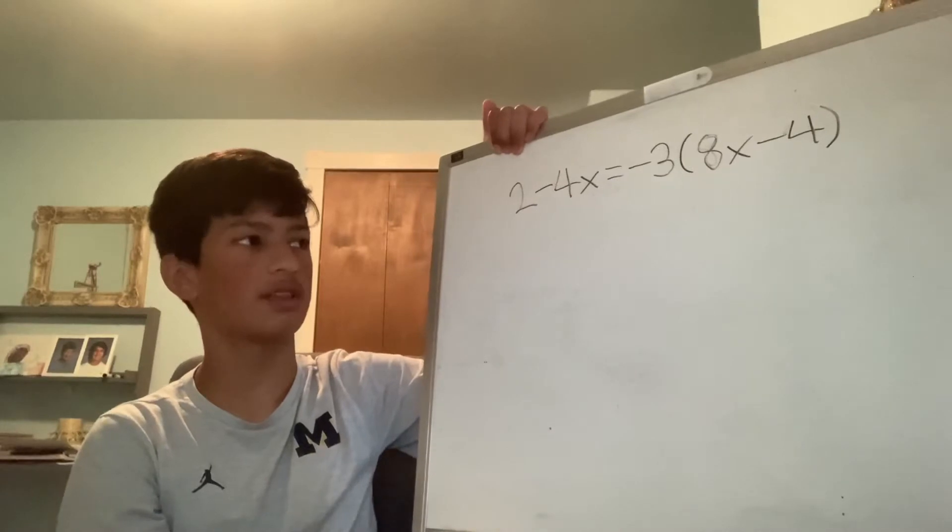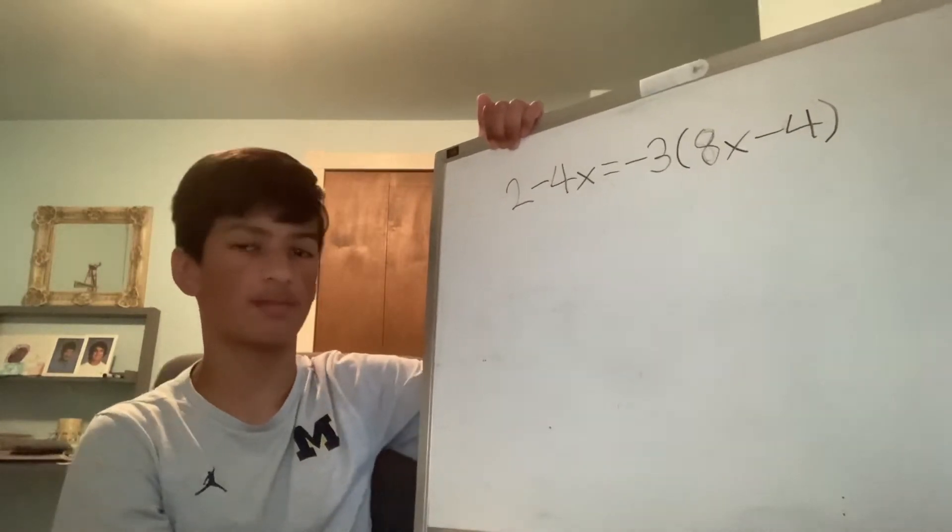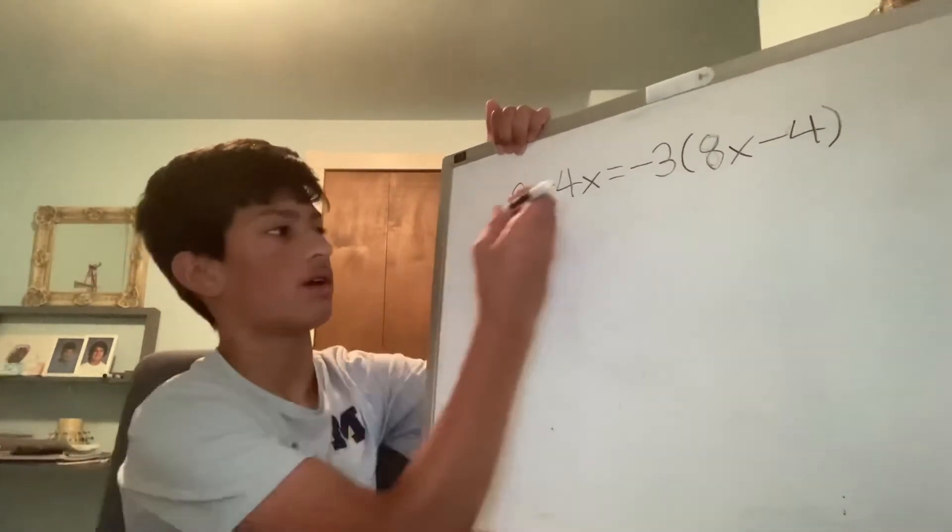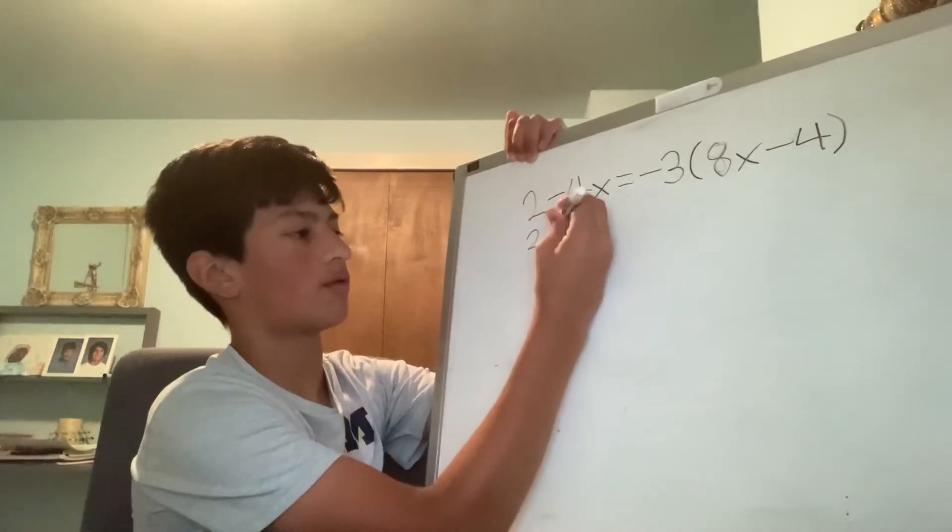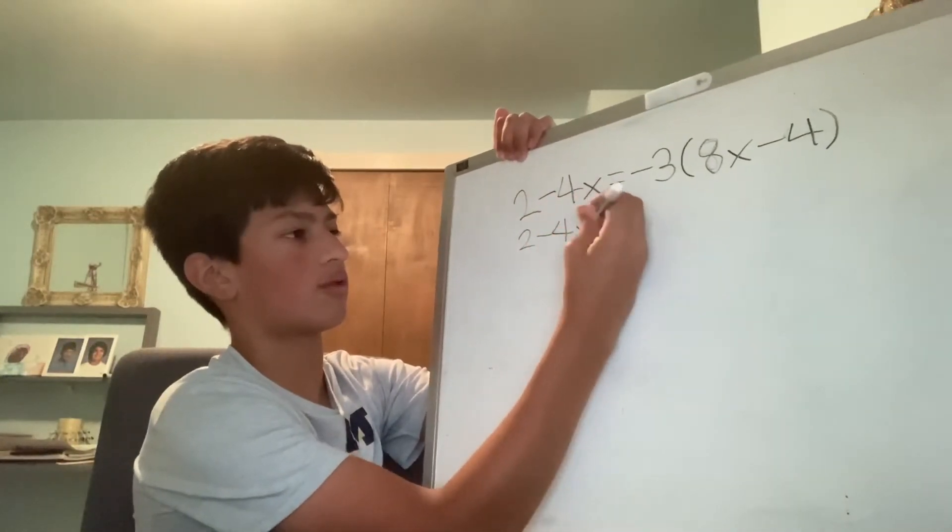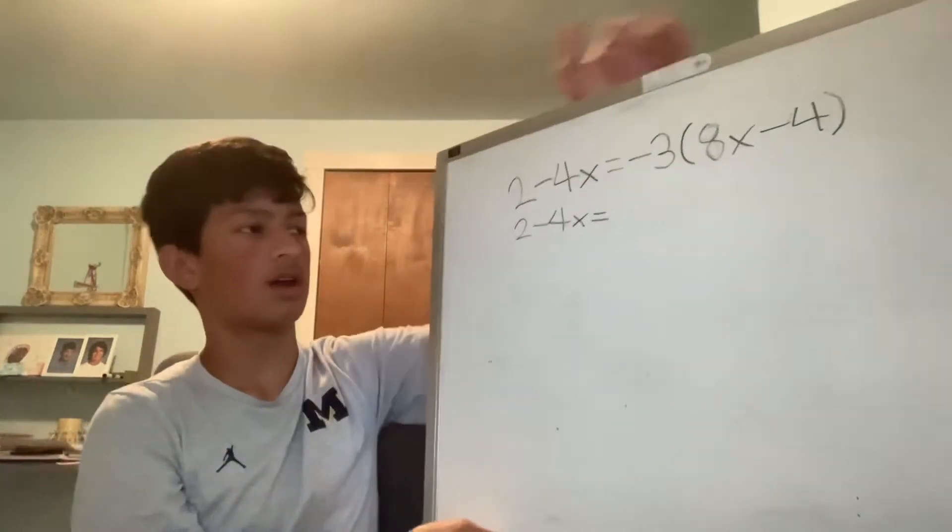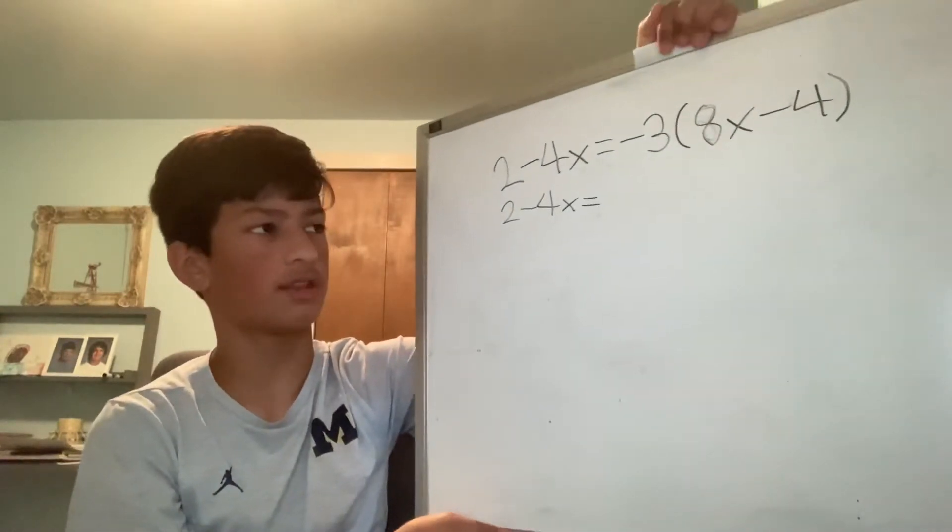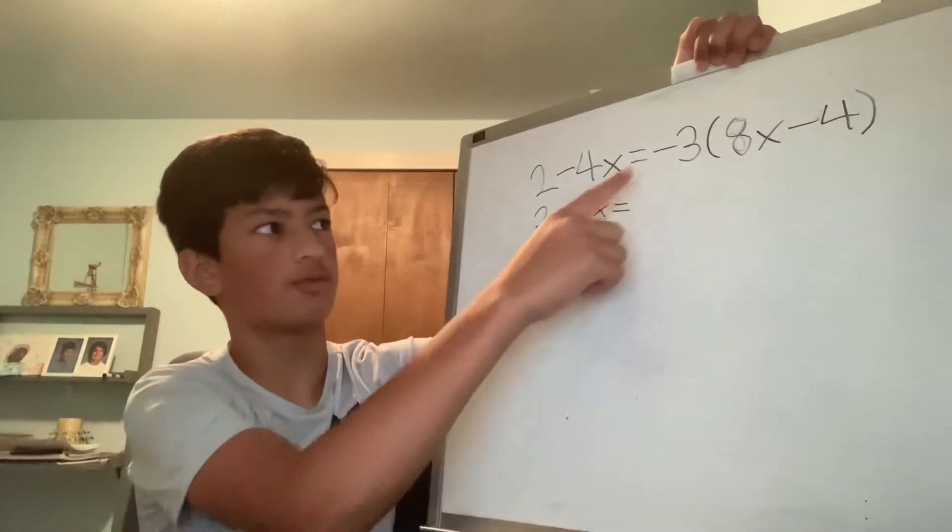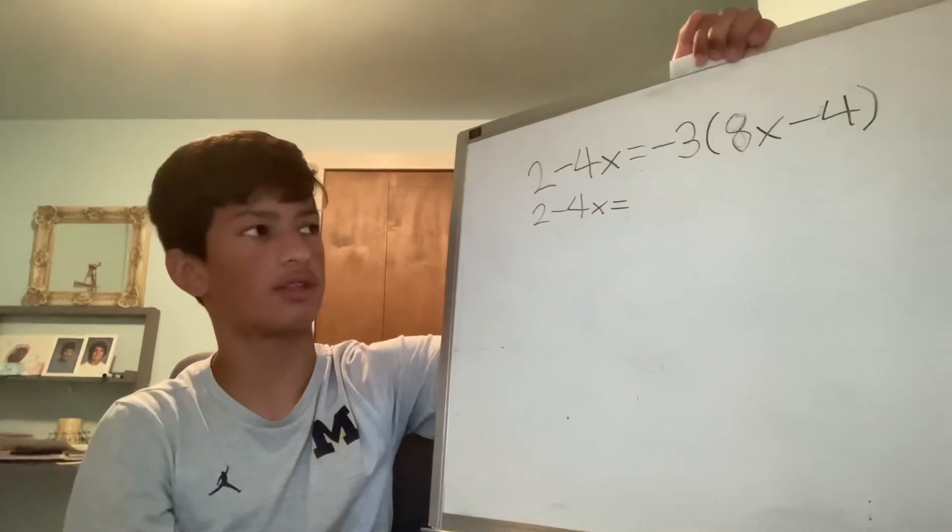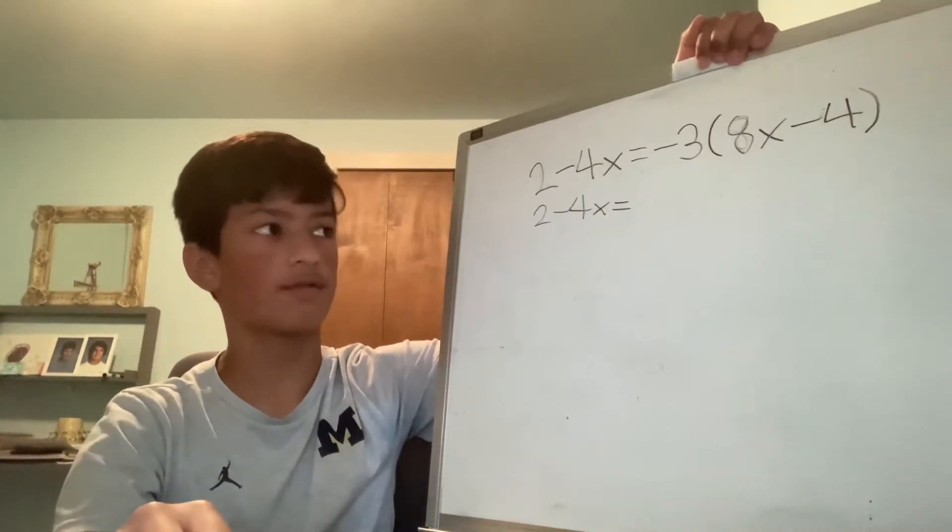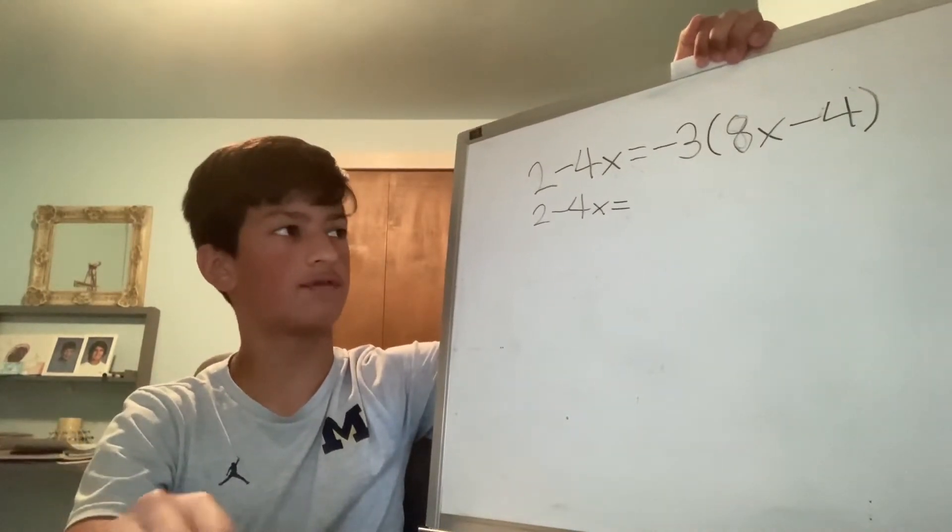I can begin by simplifying the expression on the right by using the distributive property. After rewriting the expression on the left, I can begin to distribute the negative 3 to the 8x. Negative 3 times 8 equals negative 24,